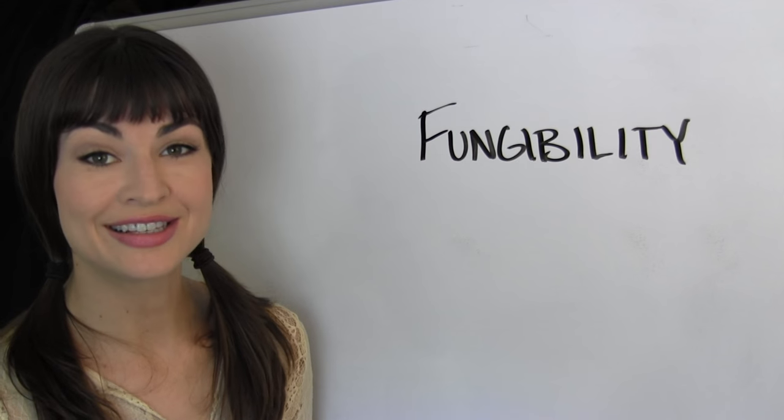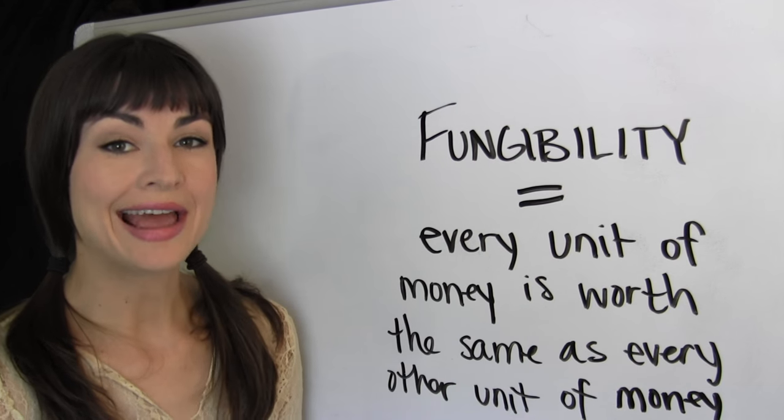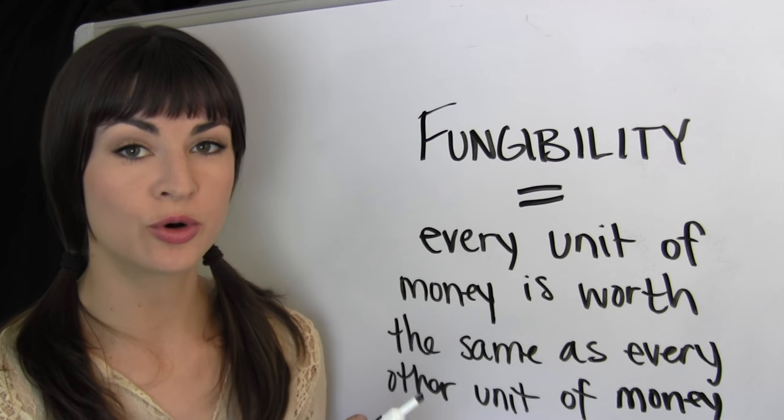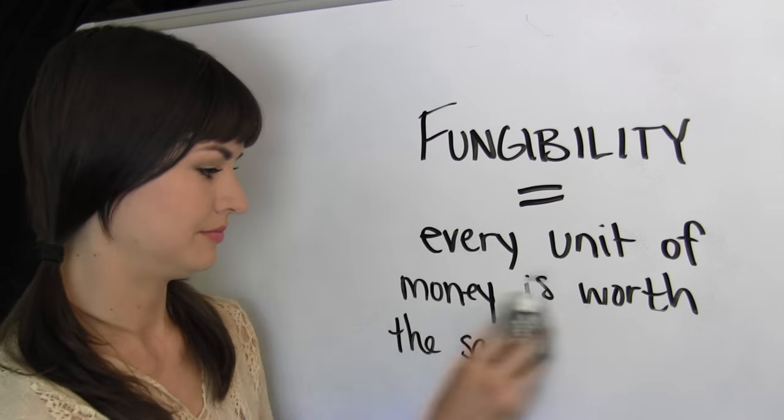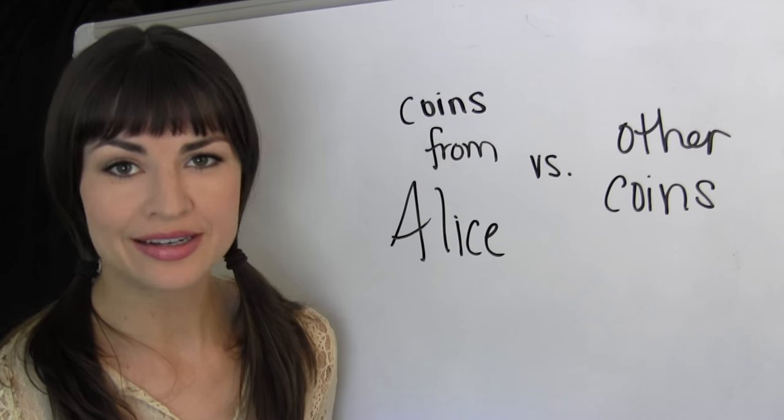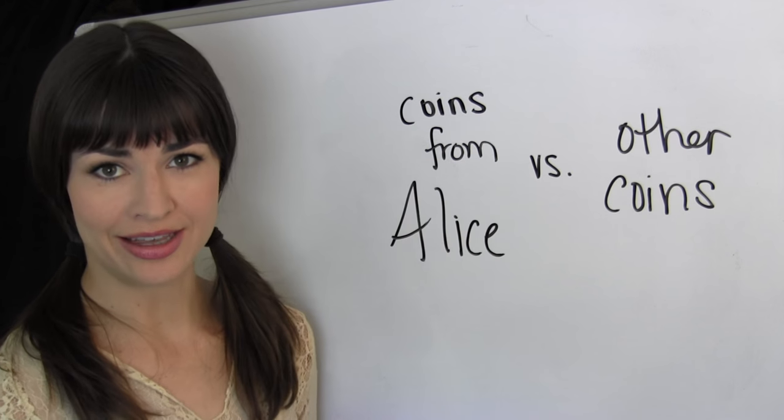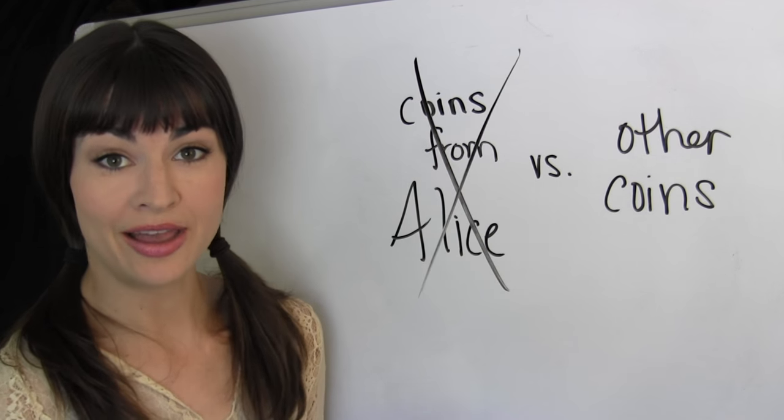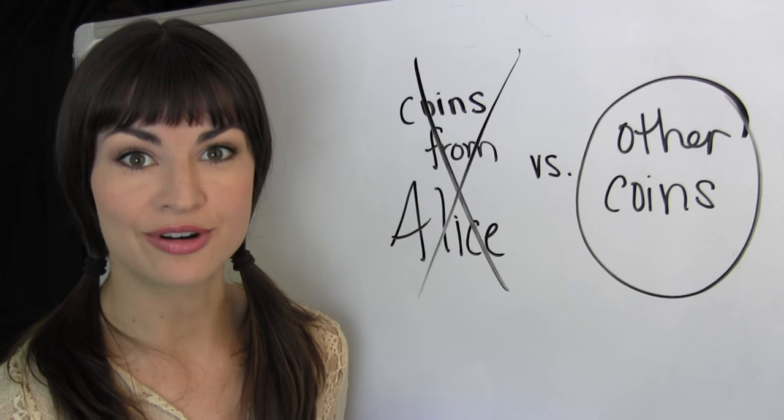Because paper cash has a highly desirable property of money. Which is this fancy word called fungibility. Which means that every unit of money is worth the same as every other equal unit of money. Which practically translates into me never being able to insist, I don't want coins from Alice. Send me other coins. They're worth more to me.